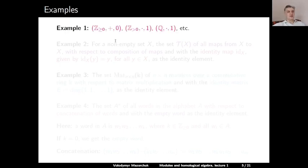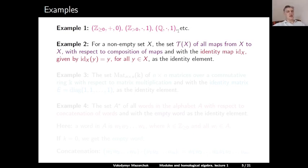Here are some examples of monoids. The numerical monoids: the monoid of all non-negative integers with respect to addition, with 0 being the identity element. Also, the monoid of all positive integers with respect to multiplication, with identity element 1. Similarly, all rational numbers with respect to multiplication and 1 as the unit element, and so on. Example two: the set of all maps from a fixed set X to itself with respect to the composition of maps. This is also a monoid where the neutral element is the identity map id_X on X — applied to some element Y in X, it produces Y.